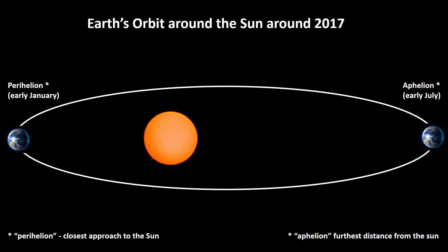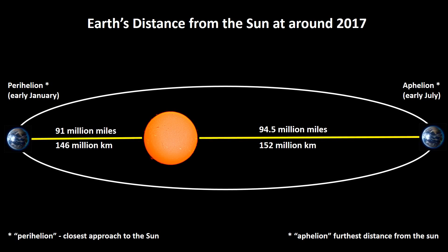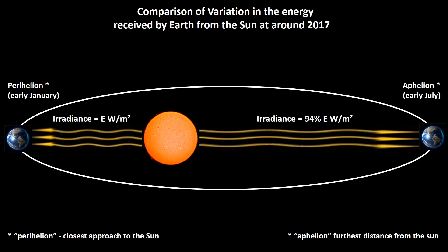Although this diagram gives a flattened view, currently the Earth's orbit is almost a circle. It is at its closest to the Sun in early January, the point known as the perihelion, and at its furthest distance in early July — the aphelion. When closest to the Sun, the separating distance is approximately 91 million miles, or 146 million kilometers. When furthest from the Sun, the distance is roughly 94.5 million miles, or 152 million kilometers. This translates into a current difference in the total solar irradiance of only about 6%.